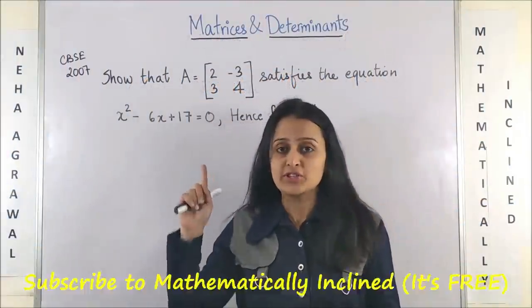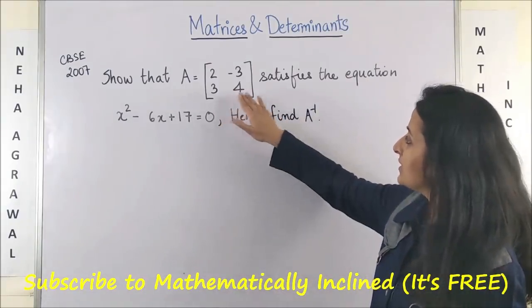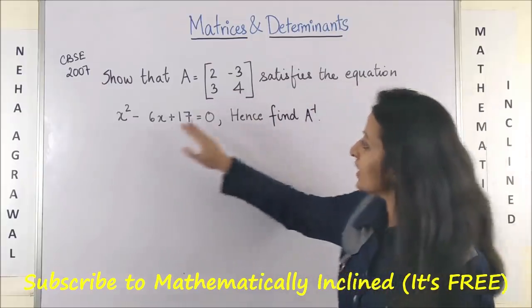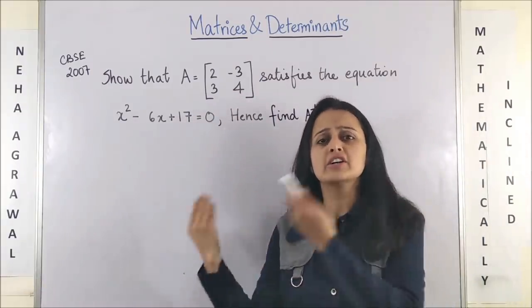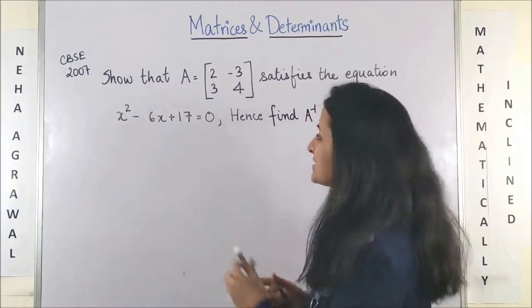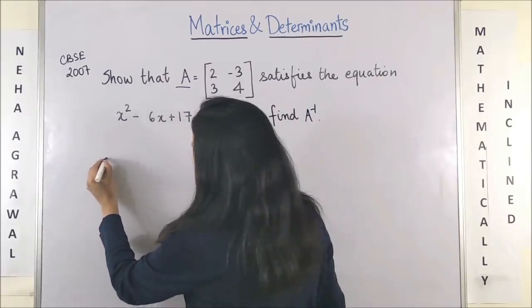So this question came in CBSE 2007. The question says, show that this matrix A satisfies this given equation. Hence, find A inverse. First part is very simple. It satisfies. So matrix A satisfies this. That means...